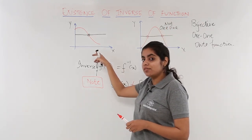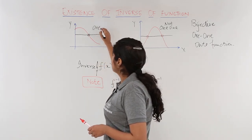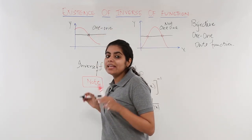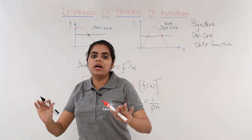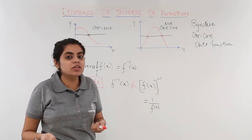And here only intersection at one point, so it was one-one. And if it is both one-one and onto, it is a bijective function. And if it is a bijective function, it is an invertible function.